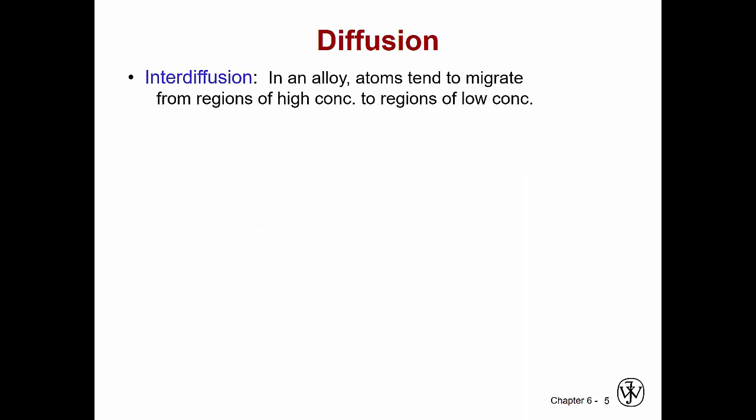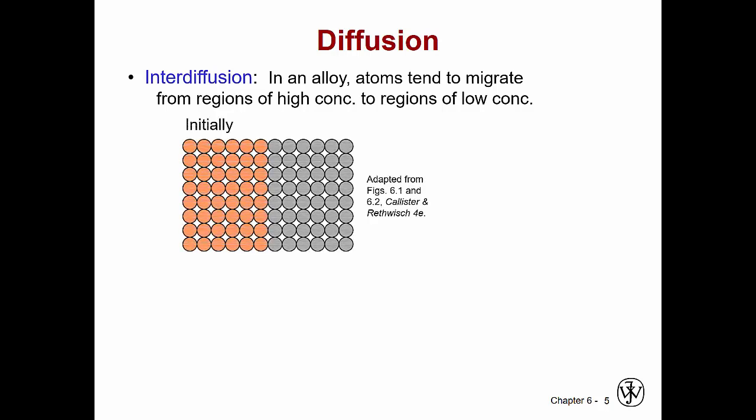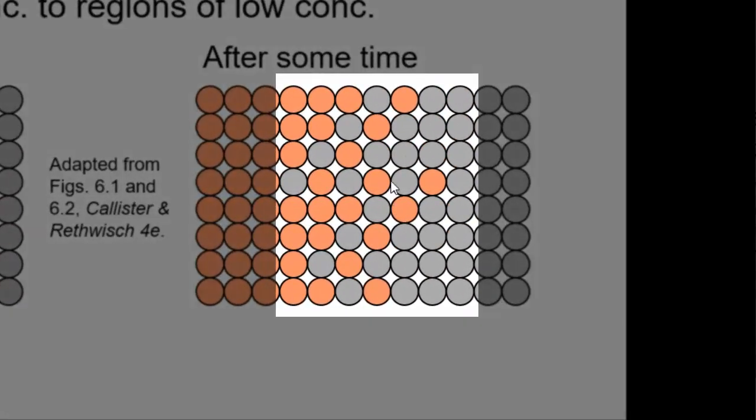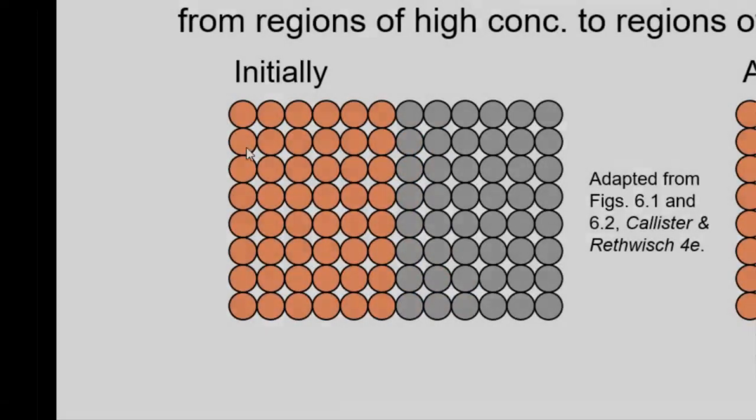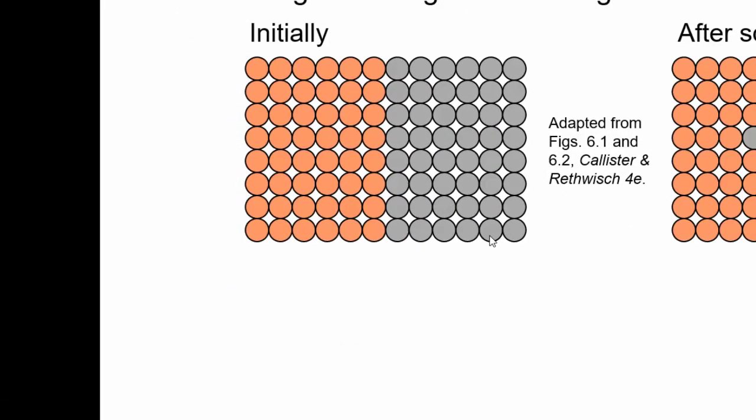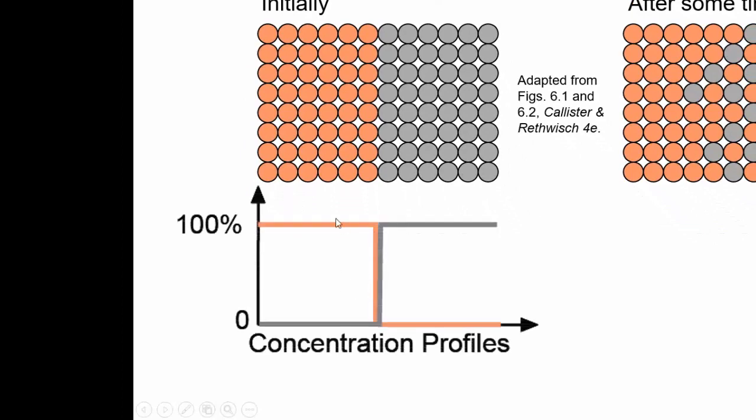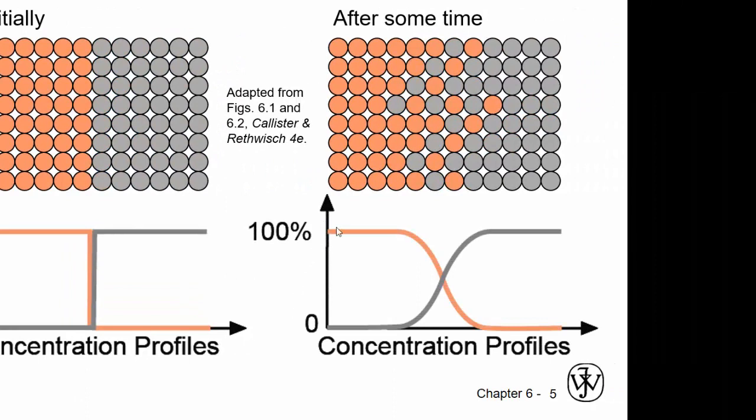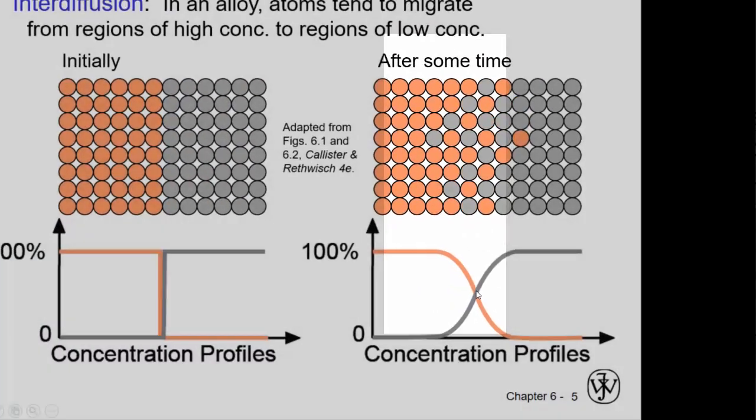Interdiffusion happens when you have an alloy. If you have certain regions of high concentration in an alloy, those atoms will move to regions of low concentration. It's similar to the interdiffusion of a single material, but in this case, you have two different materials that will eventually begin to mix. So, we start with a full concentration, 100%, say, copper here, and 100% aluminum here. Over time, you will see that it still might be 100% copper well on one side, and 100% aluminum well on the other side. But in between, you might have kind of a mix. So, right here, it's maybe 50-50.